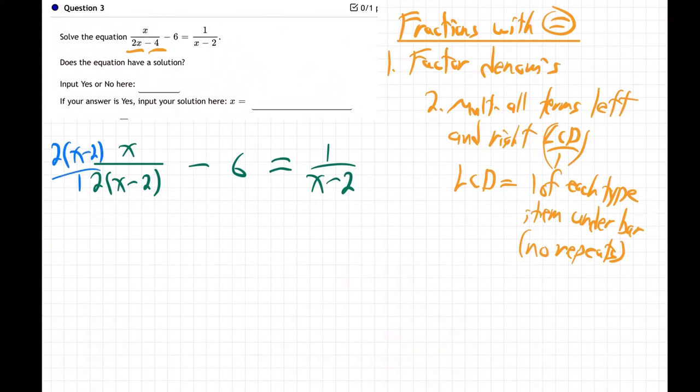And that'll be what goes under the bar. So here we go. 2x minus 2 over 1. 2, x minus 2 over 1. 2, x minus 2 over 1. All the terms, left and right. All the terms, left side and right side of the equal sign.